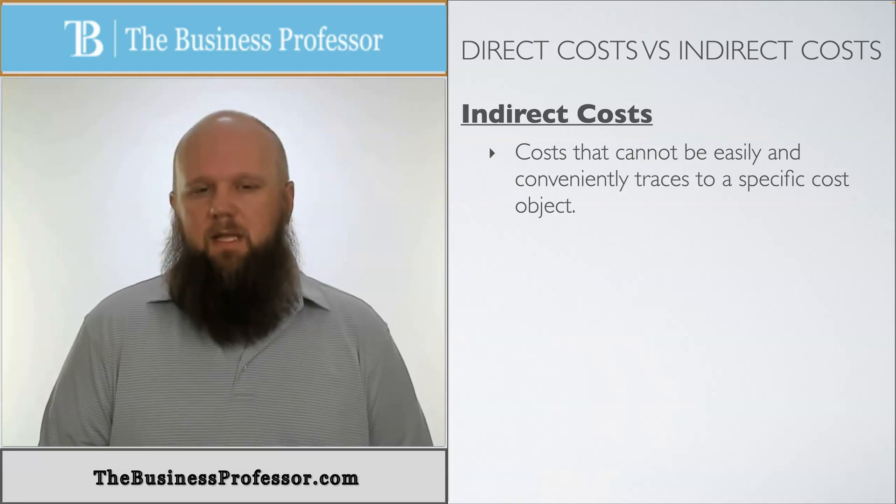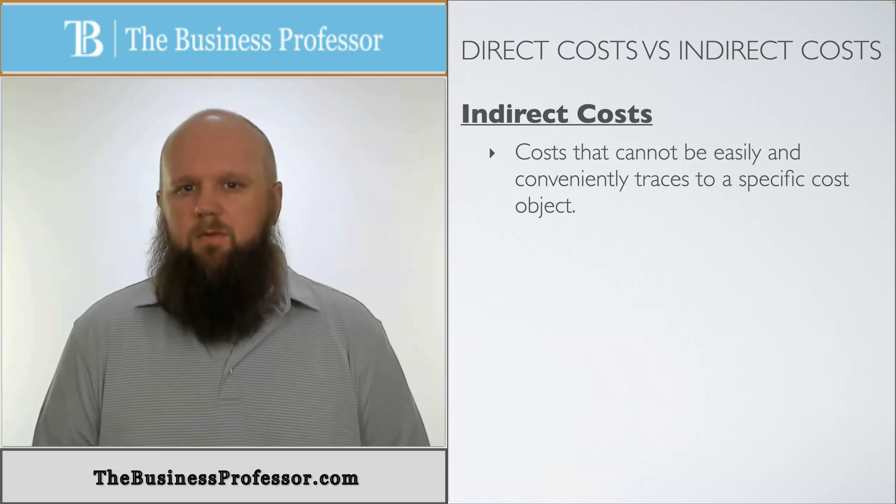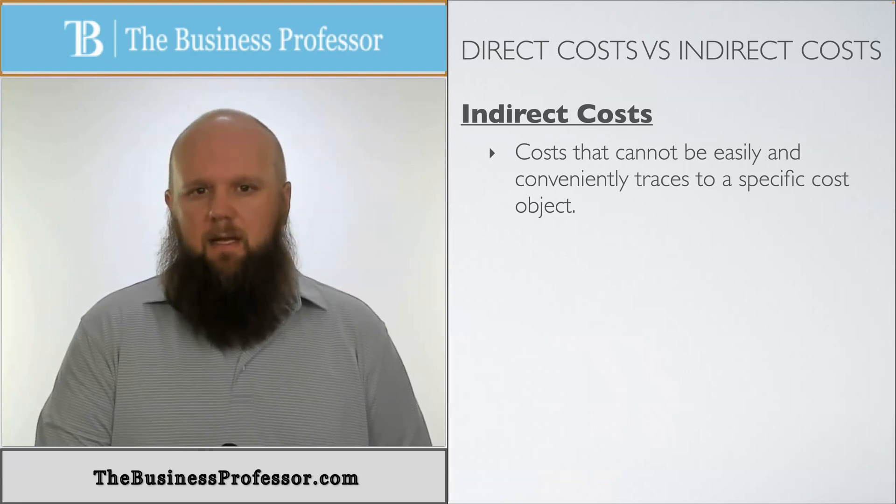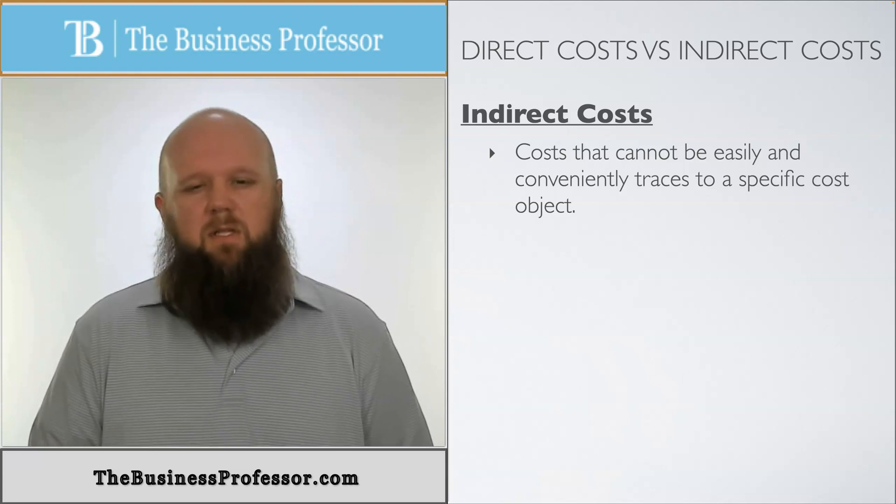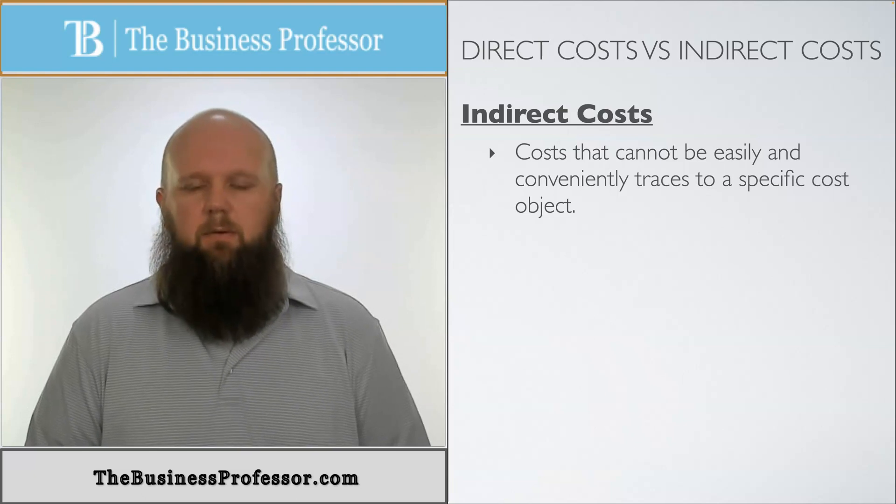The hammer, I'm not going to use the cost of the hammer directly for the house because I'm going to use that hammer for more than one house. So how can I allocate the cost of that hammer to that one house? It's not easily or conveniently traced back to that one house. So those are examples of direct and indirect costs.